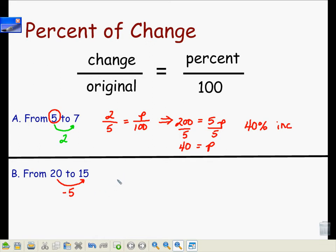I will write my change as a negative 5 over my original, which is 20, is equal to the percent, which again I don't know, so I'll use the letter P over 100.